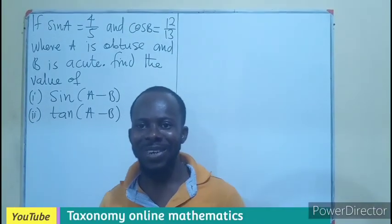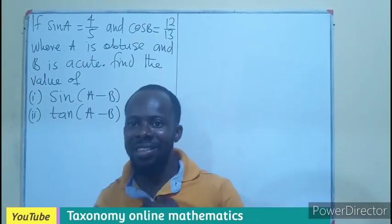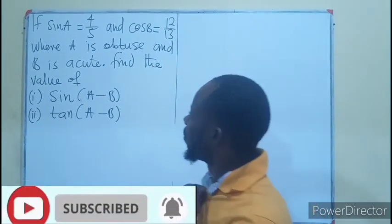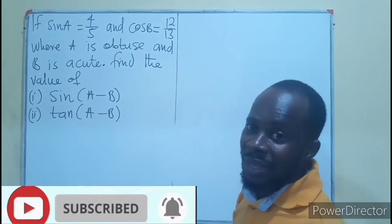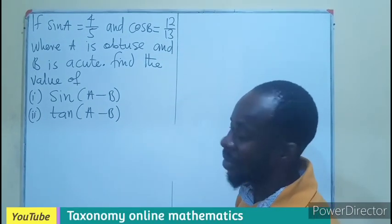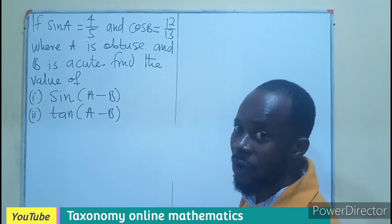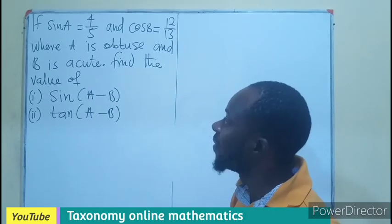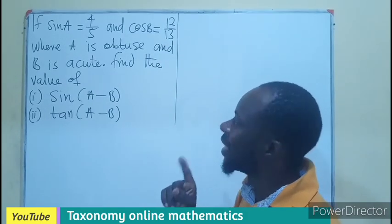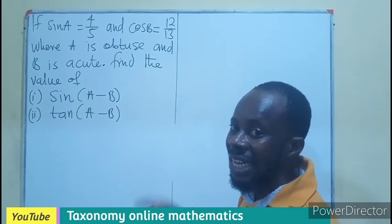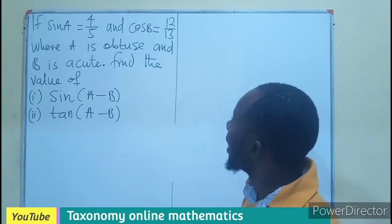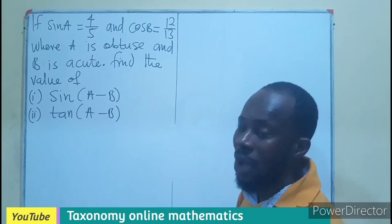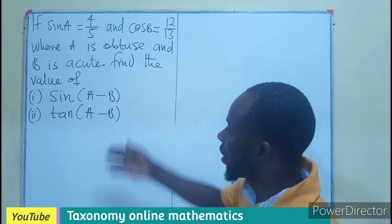Hello, welcome to the channel. Let's answer this question from one of our followers. We are to find sin(A - B) and cos(A - B), where sin A = 4/5 and cos B = 12/13, where angle A is an obtuse angle — meaning it is in the second quadrant — and B is an acute angle, meaning it is in the first quadrant.